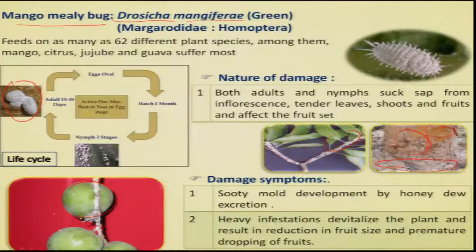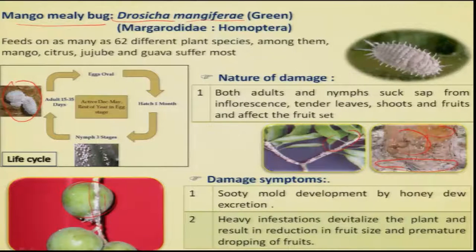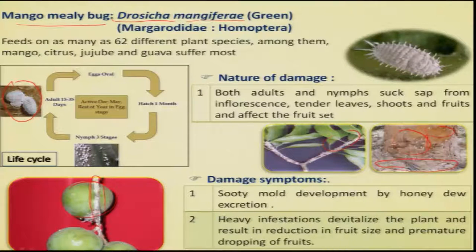On the leaves, the damage leads to yellowing of the leaves. But most importantly, damage on the fruits is significant — the stalks infested by the mango mealy bug leads to drying up and dropping of fruits. This pest also causes sooty mold development, which affects the photosynthetic activity.